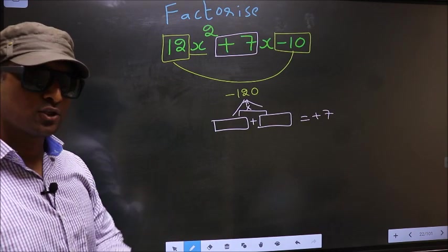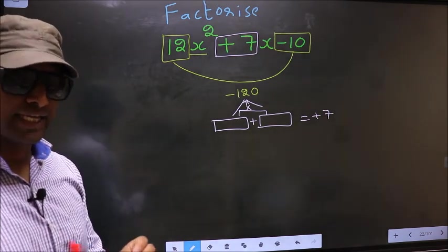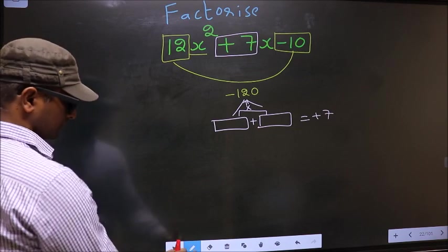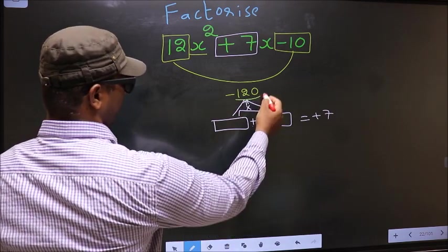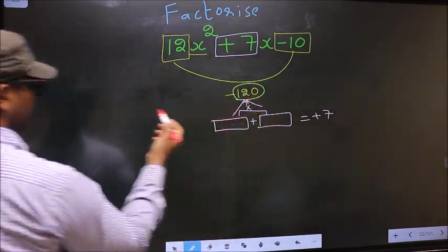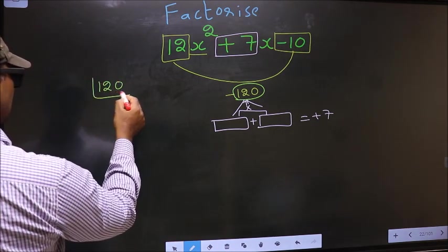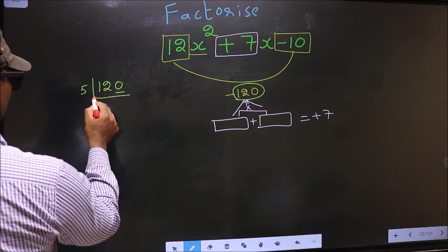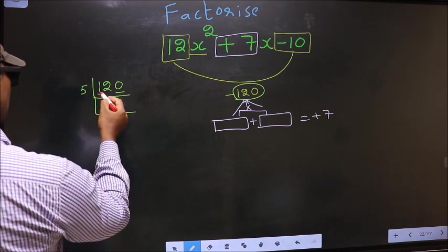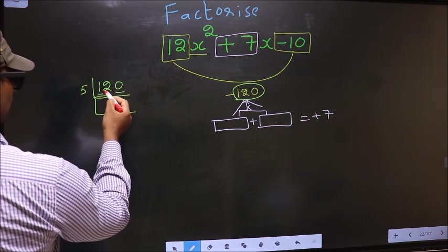To get those two numbers, we should take LCM of 120. So I take the LCM here. 120. The last digit is 0, so we take 5 here. The first number 12, smaller than 5, so we take two numbers 12.